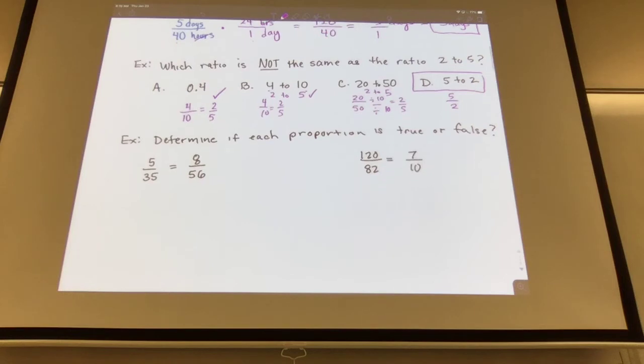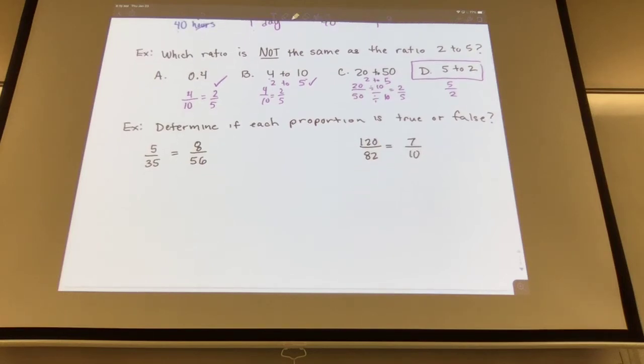Determine if each proportion is true or false. When we're trying to determine if the proportion is true or false, we can cross multiply. 35 times 8 equals 5 times 56. 5 times 56 is 280, and 8 times 35 is 280, so what would you say about the two proportions? True. Yes, they're equivalent, so we would just say true.